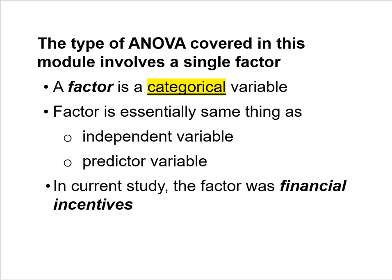The type of ANOVA covered in this module is used when we've conducted an investigation with a single factor. A factor is a categorical variable — essentially the same thing as an independent variable in a true experiment or a categorical predictor variable in a non-experimental investigation. Whenever you hear the word factor, think of it as a synonym for independent variable. In the current investigation, the factor is financial incentives.